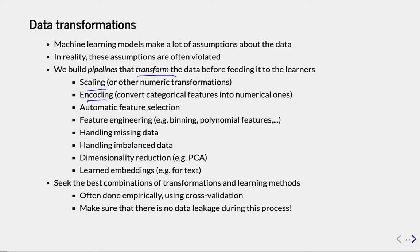We can also encode the data, which means transforming categorical features into numeric features. For instance, if we have a list of countries like the Netherlands, Belgium, Germany, and we want to give that to an SVM, it can't deal with that. So we need to transform that categorical feature into one or more numeric features. Sometimes we have many features and not all are very important, so we may want to select features beforehand, also to make models smaller and faster. The contrary is feature engineering, where we add new features based on existing ones. Often our data has missing values, and we'll have to deal with that, otherwise we can't compute distances.